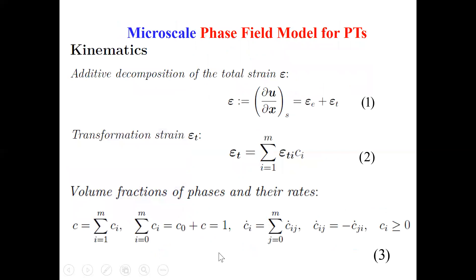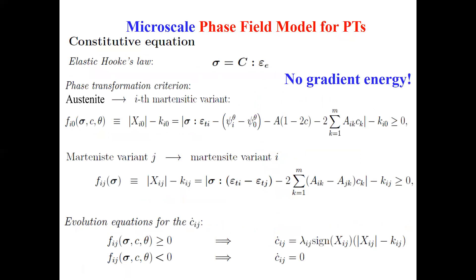The simplest equation: strain equals elastic plus transformational. For transformational strain we use simple mixture theory. The rate of change of volume fraction of each martensitic variant is the sum of rates of transformation between this variant and all other phases. These are our generalized fluxes in the expression for dissipation. Using thermodynamics, we derive an explicit expression for the driving force, which includes transformation work, jump in thermal energy, and a term from interaction energy that describes instability.